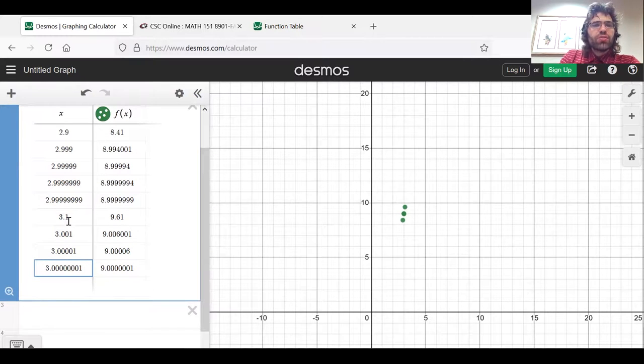And you make the same observation. The closer x is to 3, the closer f of x is to 9. And you'll notice one number that we're not plugging into this table. We're not letting x equal 3.